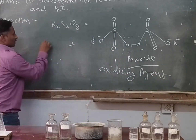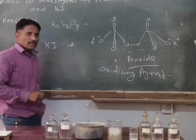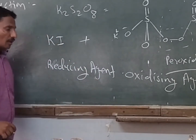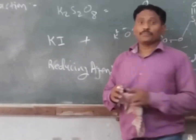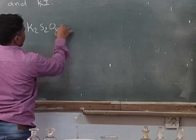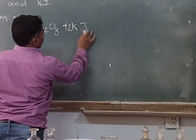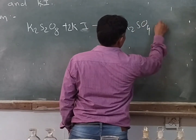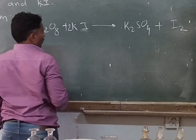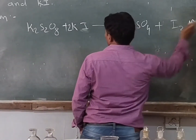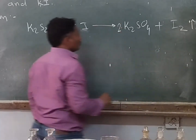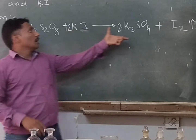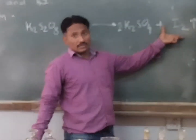The other chemical is KI — potassium iodide — which is the reducing agent here. The reaction between potassium persulfate and potassium iodide proceeds as: K₂S₂O₈ + 2KI → 2K₂SO₄ + I₂. The products formed are potassium sulfate and iodine gas.